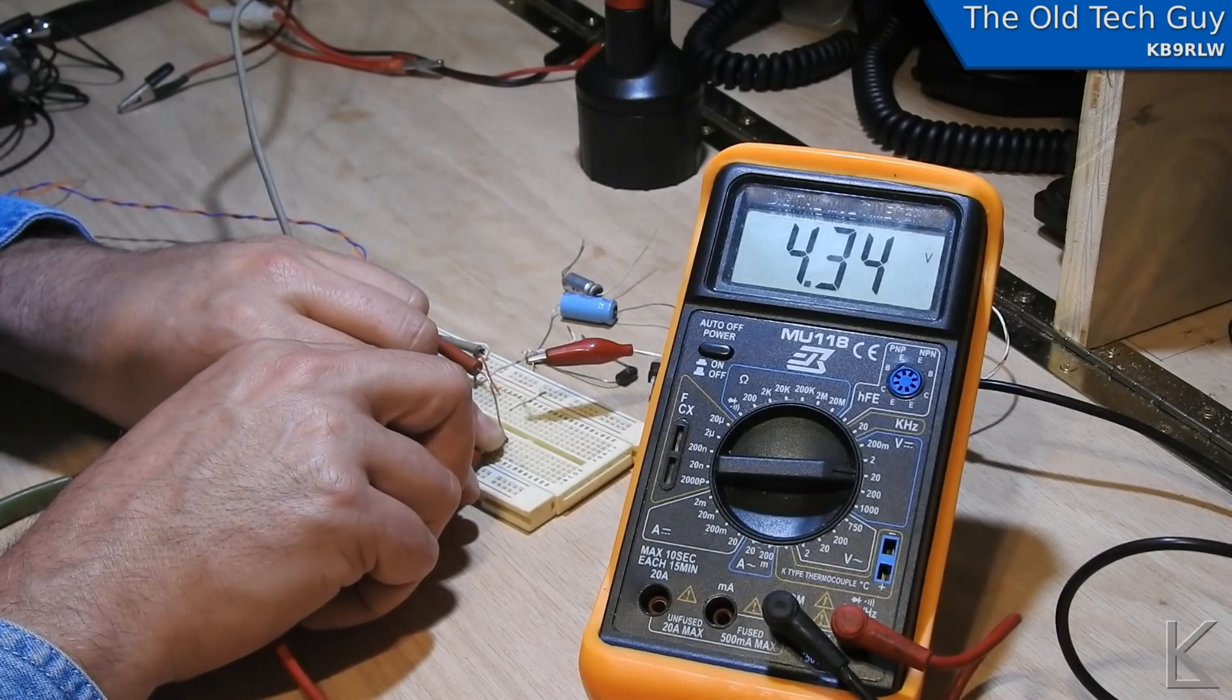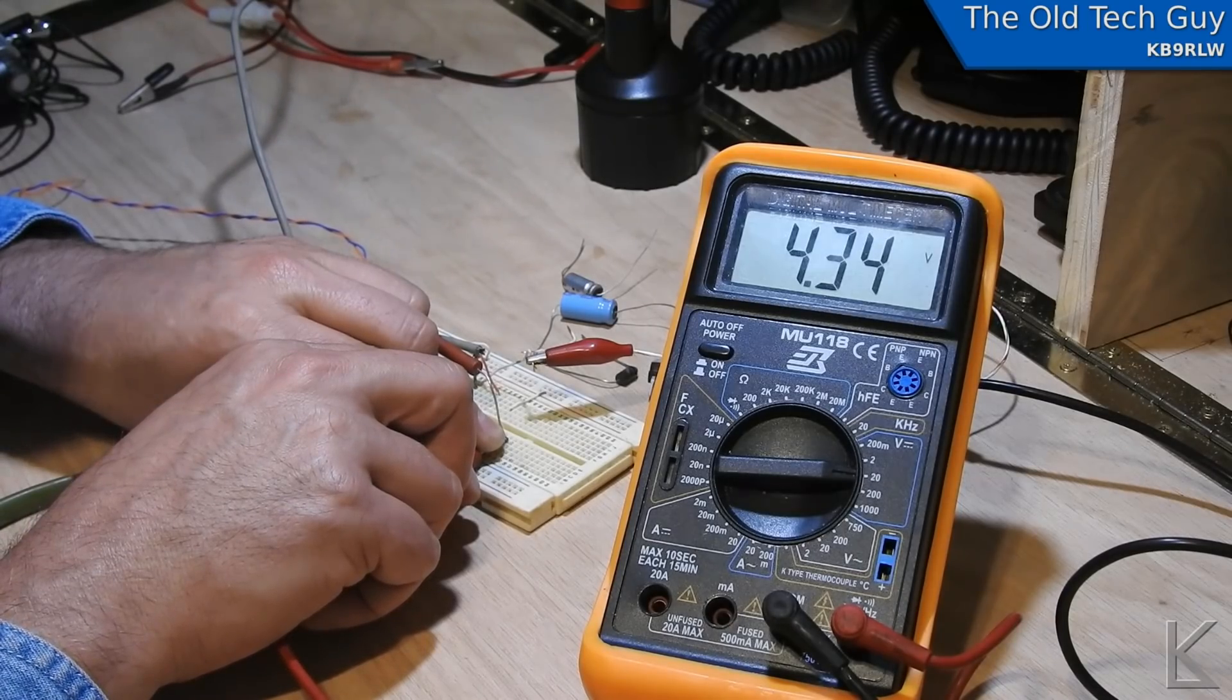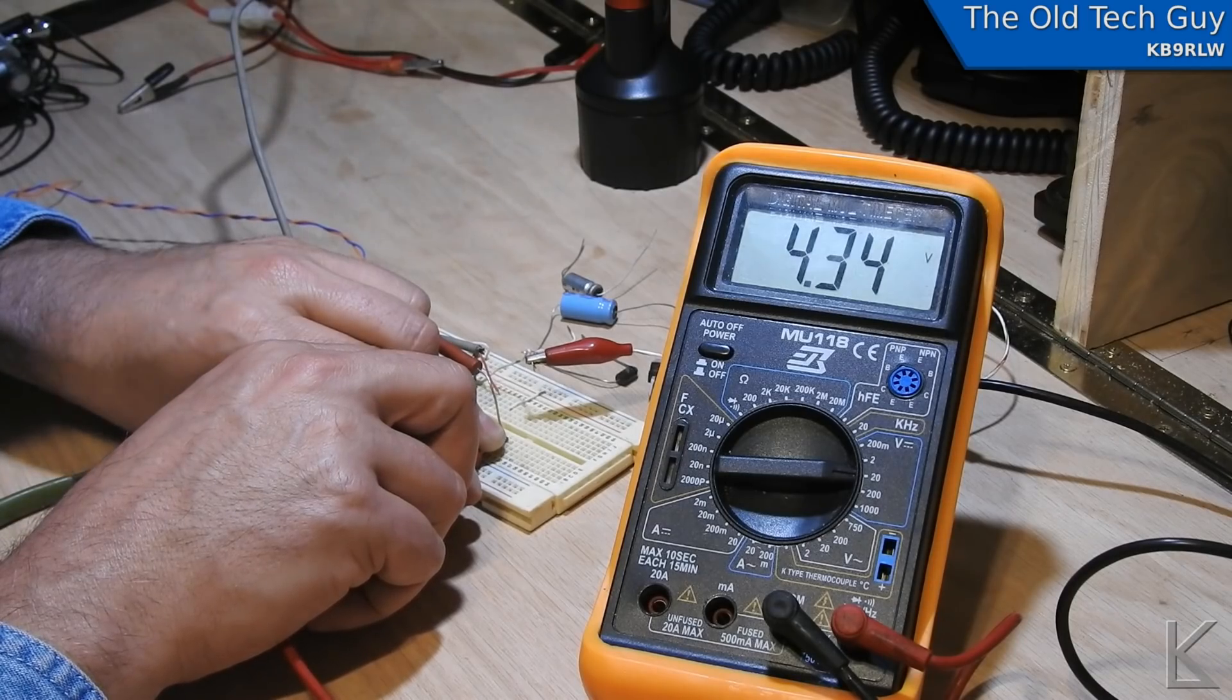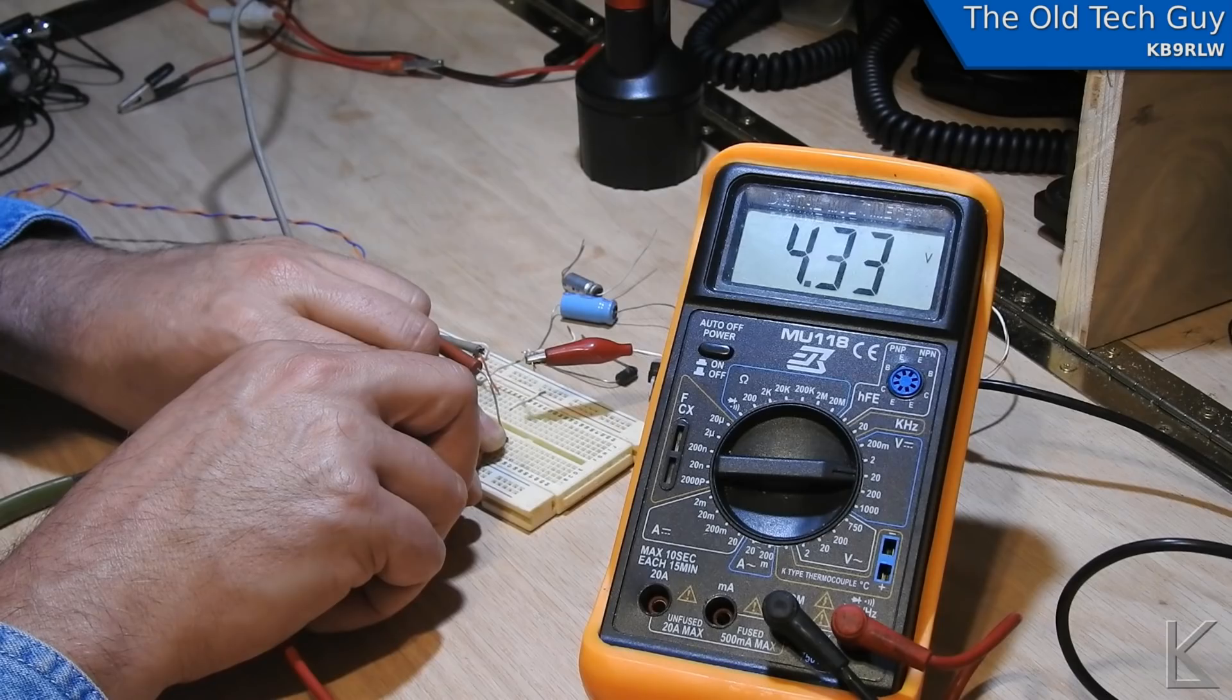4.3. So just 75 milliamps of draw, we've dropped down to 4.3 volts by the time we get to the device that's trying to charge.